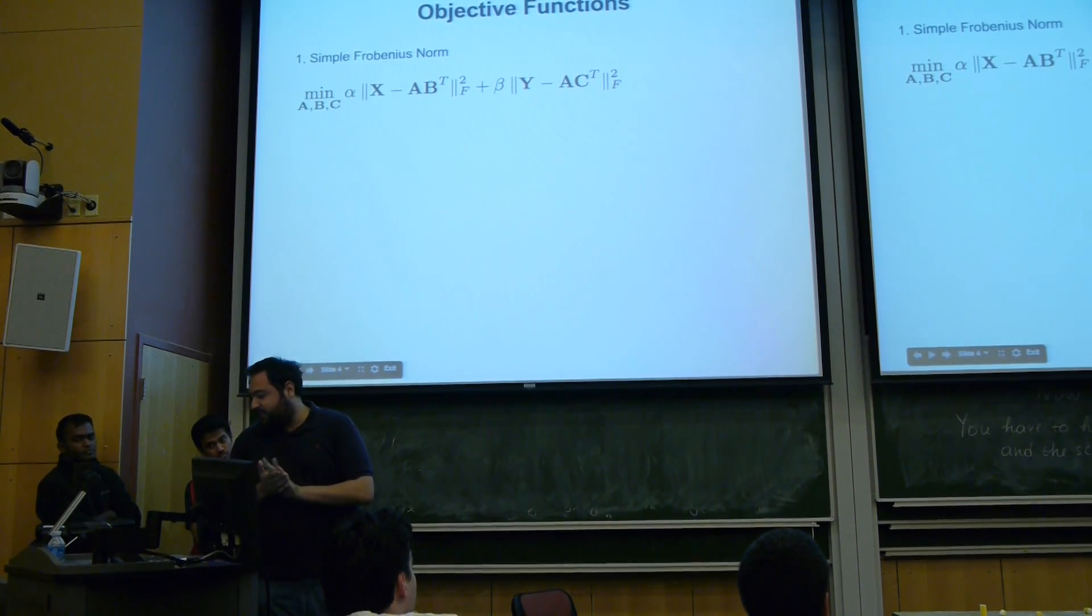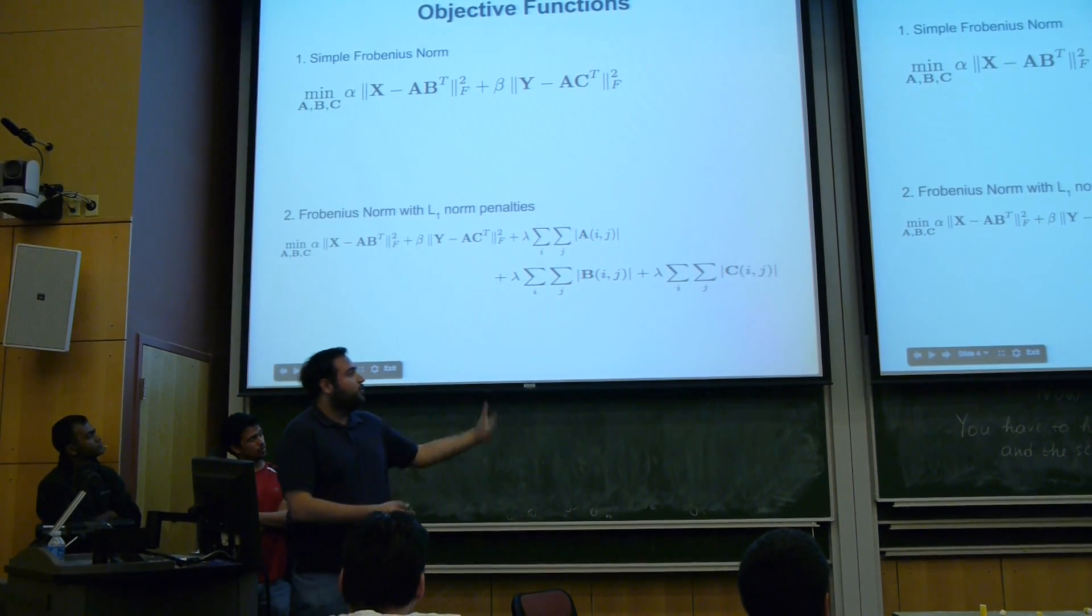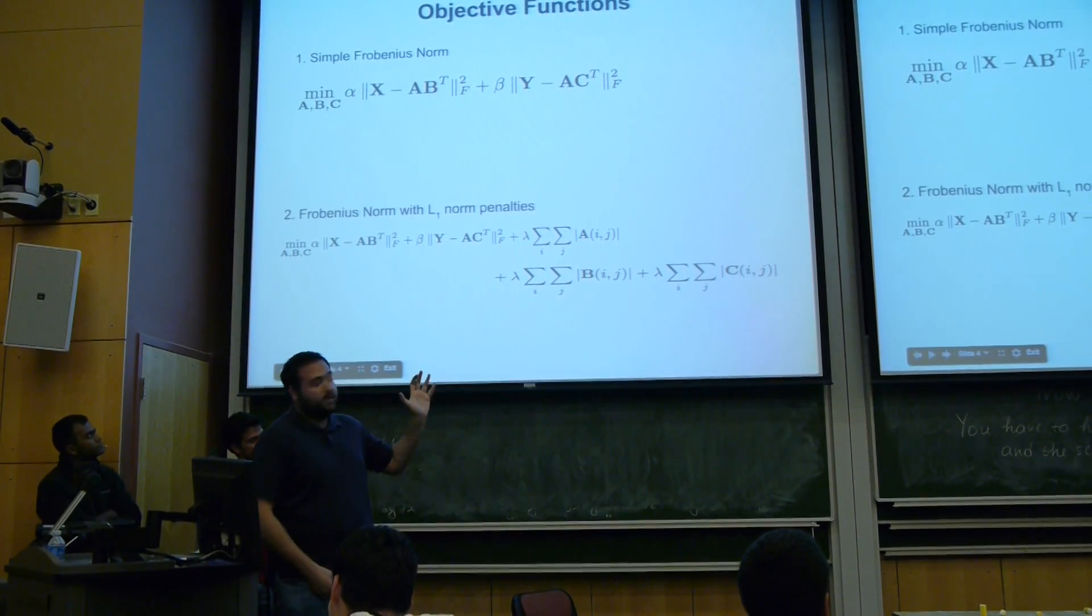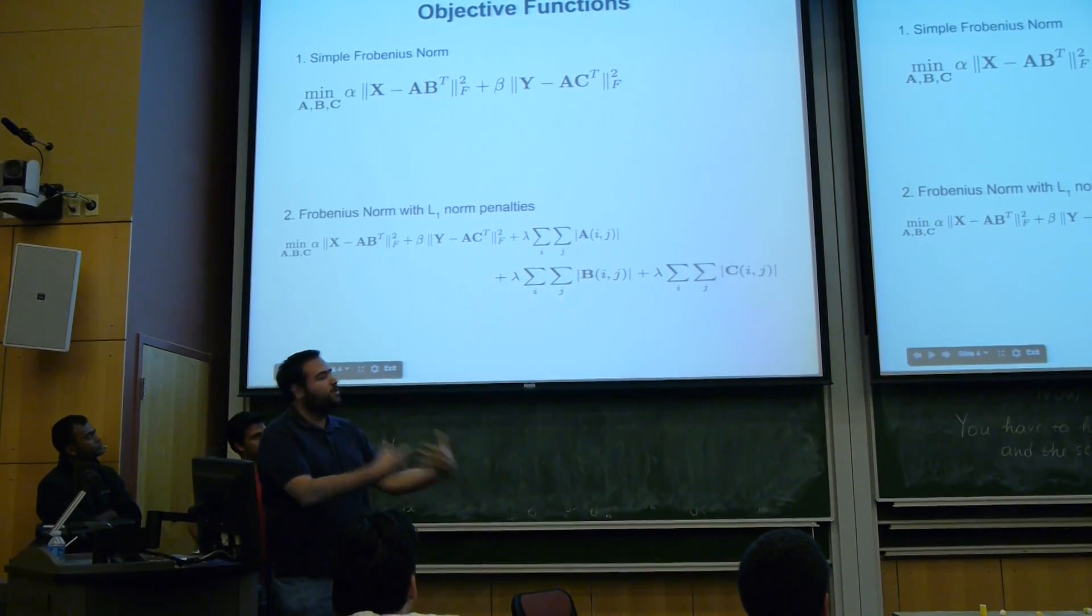I think Alex is going to disagree how good this is. But this is one thing that we can do. And another loss function, another objective function that we use, is pretty much the same as before, plus some L1 norm penalties, which have been shown to provide sparser solutions to the model.